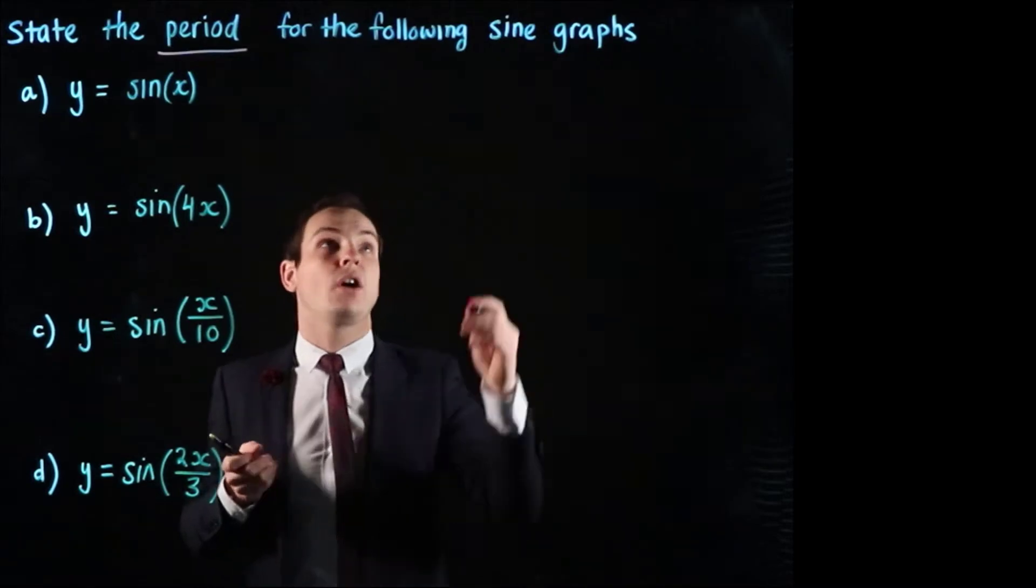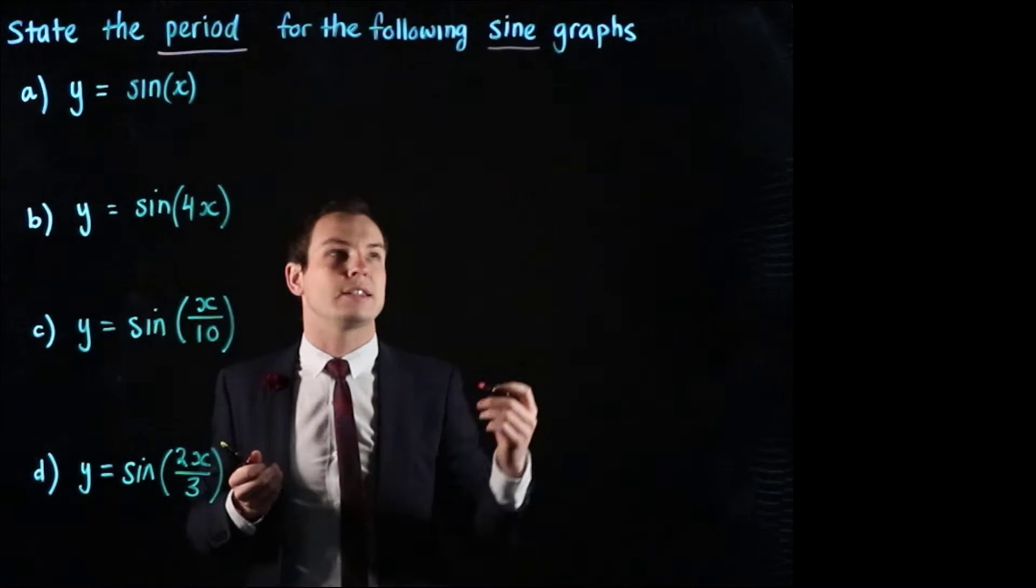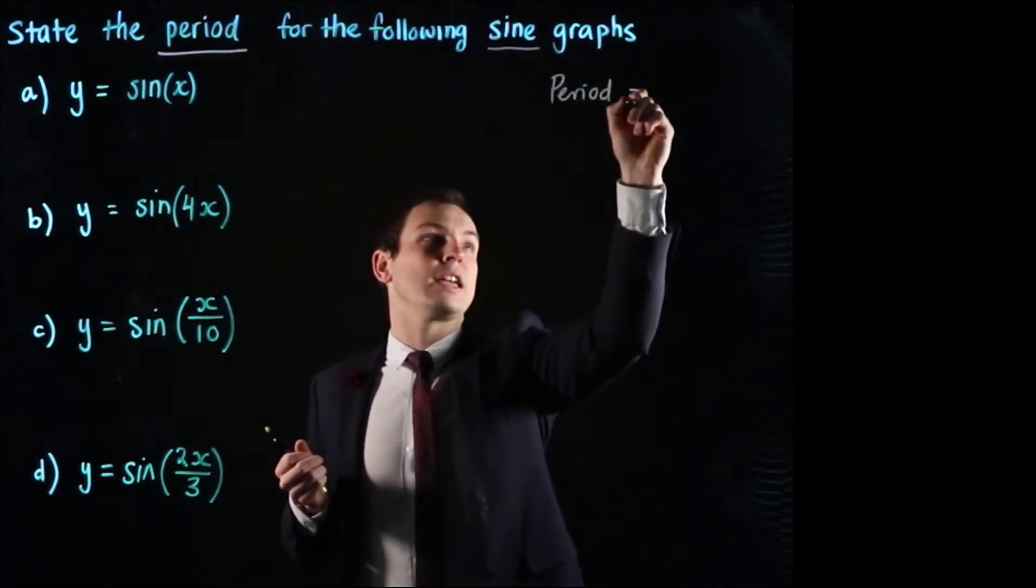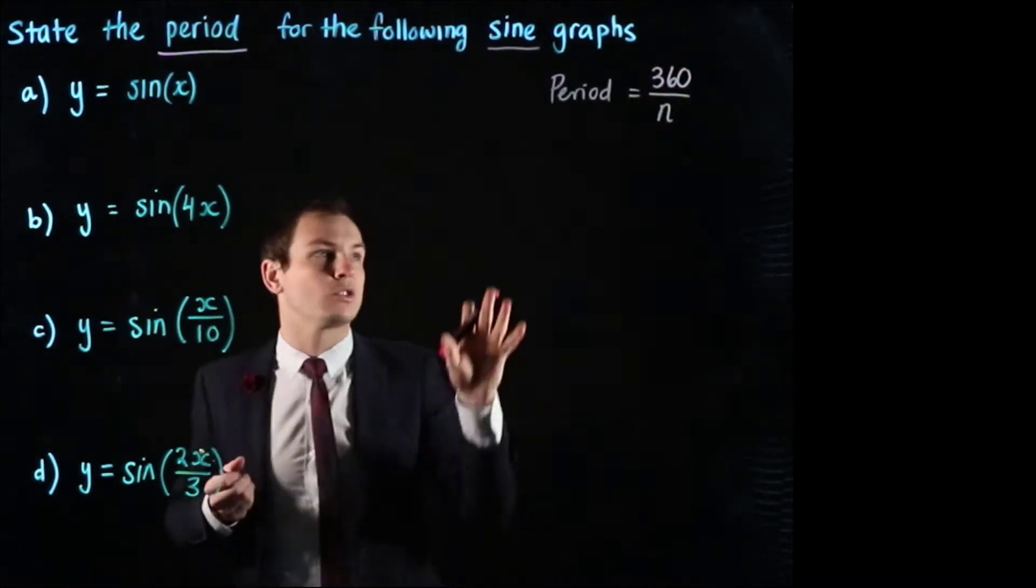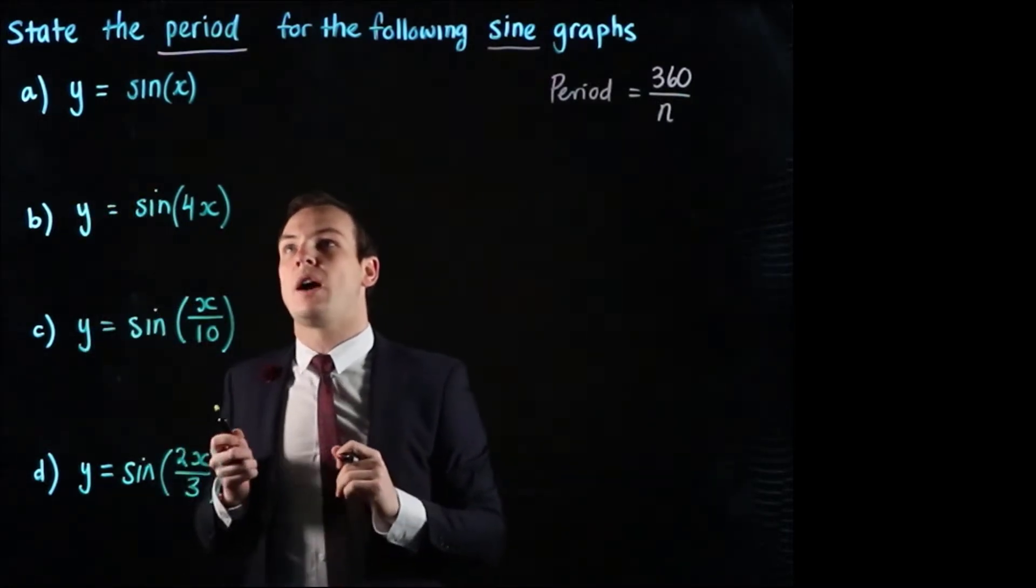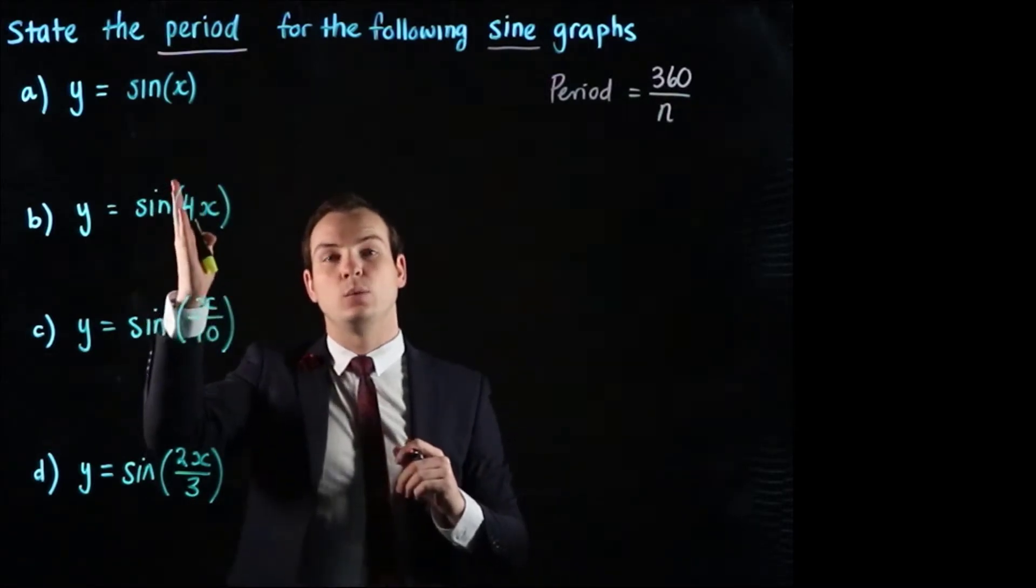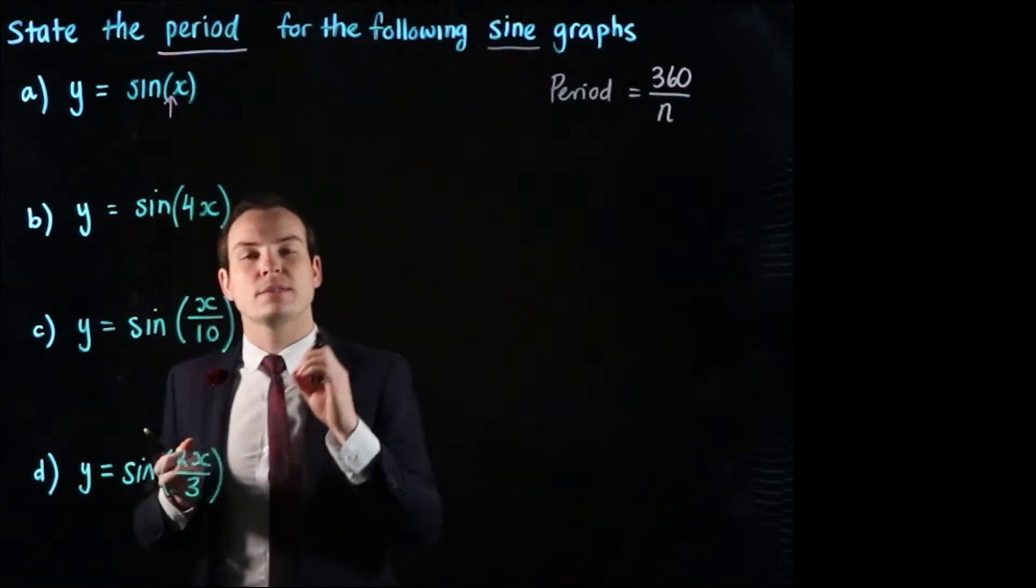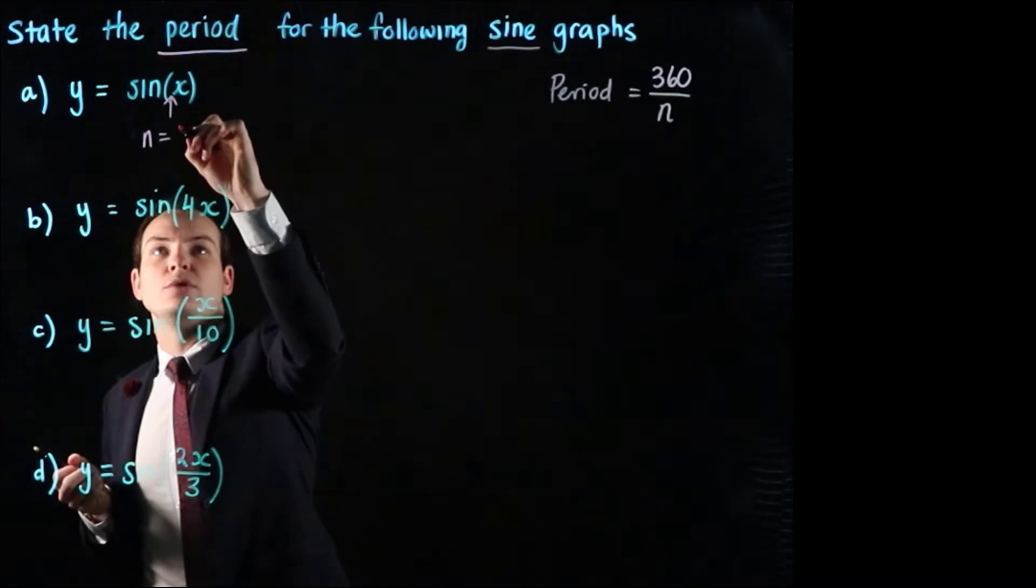Now for sine graphs we have a particular formula that will help us calculate what the period is and that is that the period is equal to 360 over n. We're going to talk about what that n means now. So for part a we have sine of x and when we write x it technically means 1 times x. So the n value is going to be whatever is multiplying the x. So in this case we're going to say that n is equal to 1.